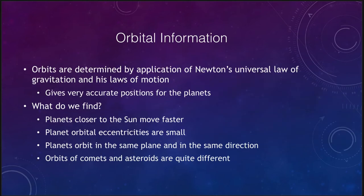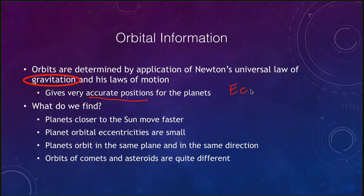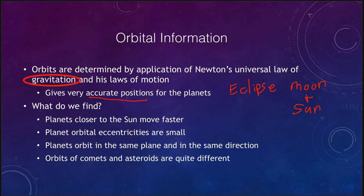Orbits are defined by Newton's law of gravitation and his laws of motion. This gives us very accurate positions for the planets. For example, we can predict exactly when an eclipse will occur — narrowed down to a tiny fraction of a second — because Newton's laws are so well tested. We know the exact positioning of the Moon and the Sun and can determine when the Moon will precisely pass in front of the Sun at any specific location on Earth.